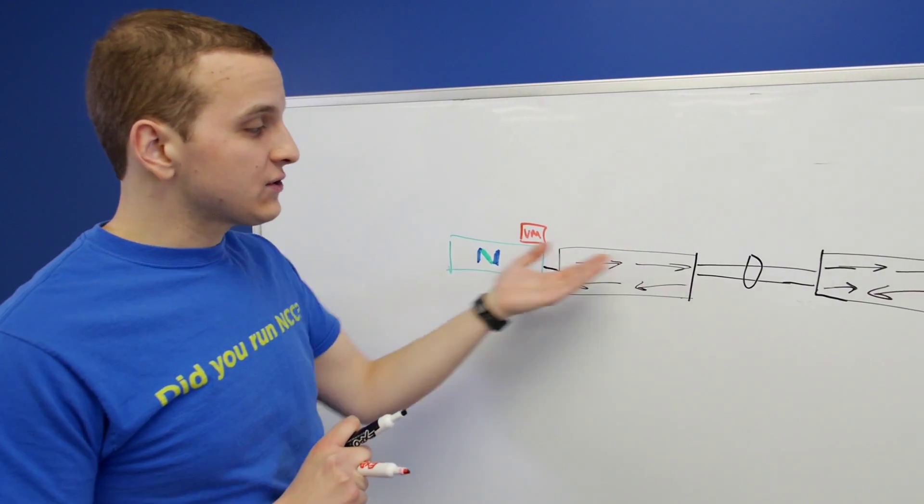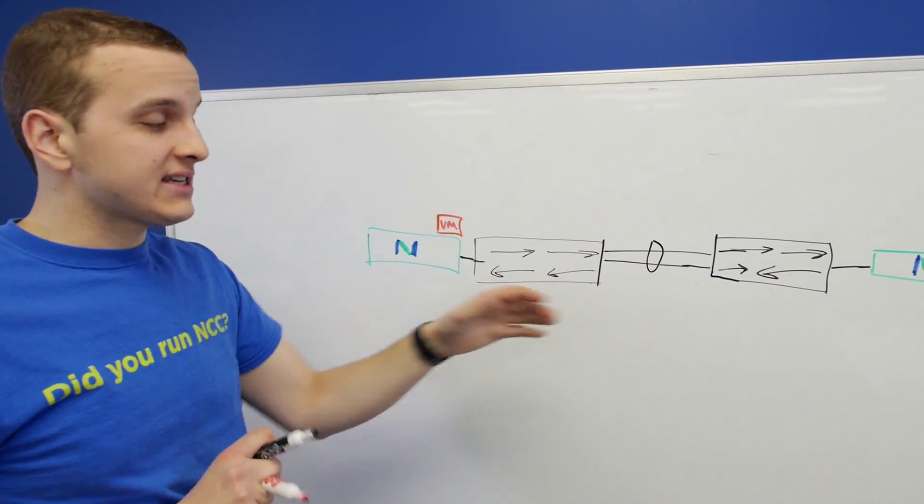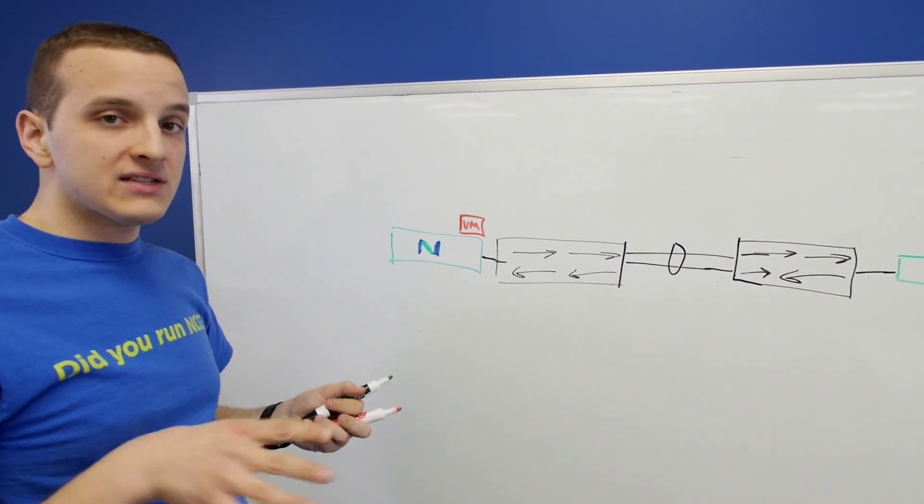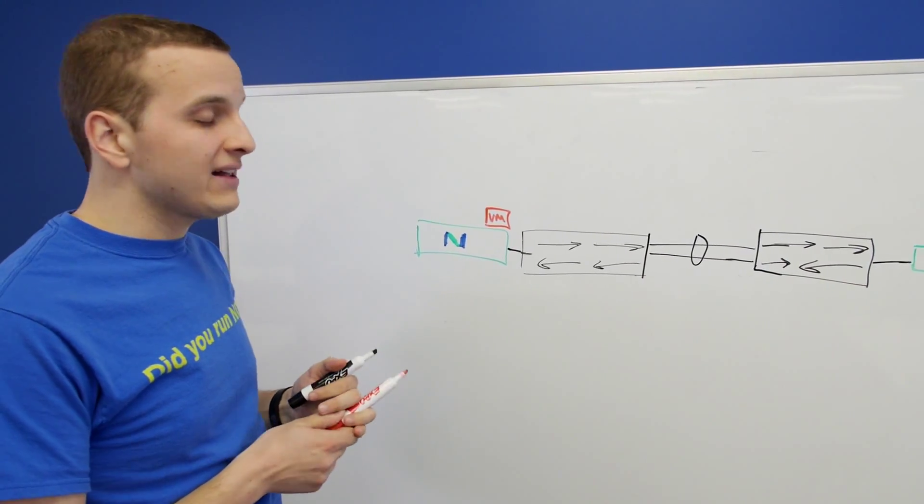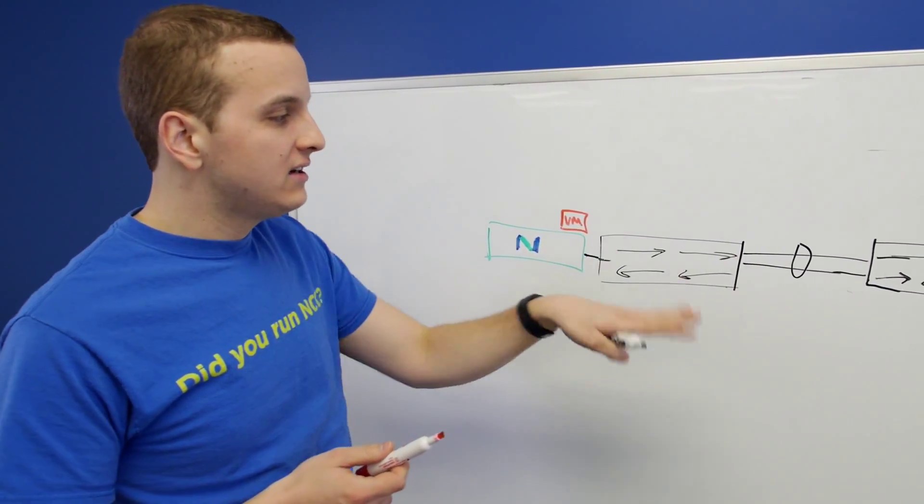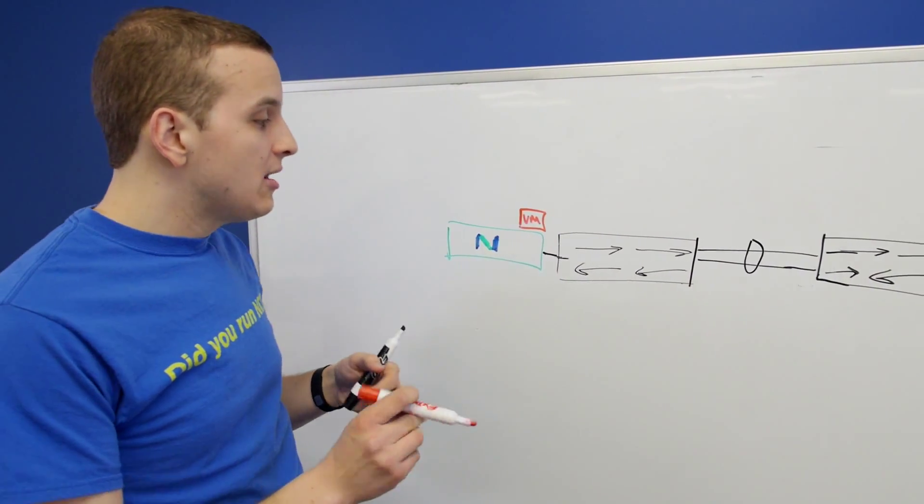So you can get a route based on source dest MAC, source dest IP. Those give you sometimes a better balance across the two, but it really depends entirely on what your traffic looks like.